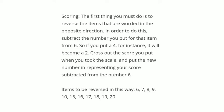The scoring is divided into two parts: reverse scoring and normal scoring. For reverse scoring — you must reverse the items worded in the opposite direction by subtracting your answer from 6. For instance, if you put 4, it becomes 2 (6 minus 4). Cross out your original score and write the new number. The items to be reversed are: 6, 7, 8, 9, 10, 15, 16, 17, 18, 19, and 20.